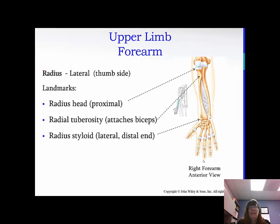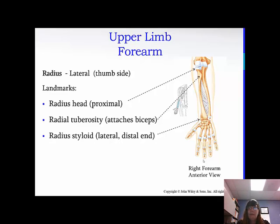The radius head is the proximal portion. The radial tuberosity is right below that, and that attaches the biceps. And then the radius styloid, or the styloid process — you have it on the lateral and distal end. So it's kind of on the outside, further away from the point of origin, further away from the shoulder, and it kind of points down a little bit.